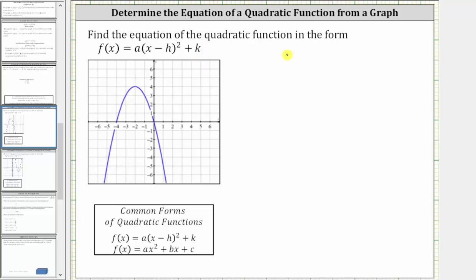We're asked to find the equation of the quadratic function in the form f(x) = a(x - h)² + k, times the quantity x minus h squared plus k, based upon the graph. We will also find the equation in the form f(x) = ax² + bx + c as well.